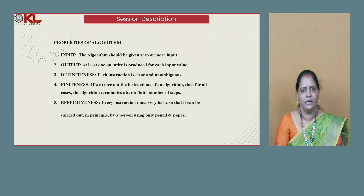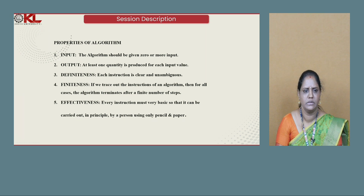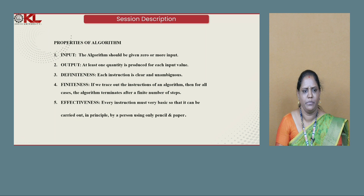The algorithm we write should have some properties. It should take some input — zero or more inputs should be given to the algorithm. It should produce some output — at least one quantity is produced for each input value. Definiteness: each instruction is clear and unambiguous. Finiteness: if we trace out the instructions of an algorithm, then for all cases, the algorithm terminates after a finite number of steps.